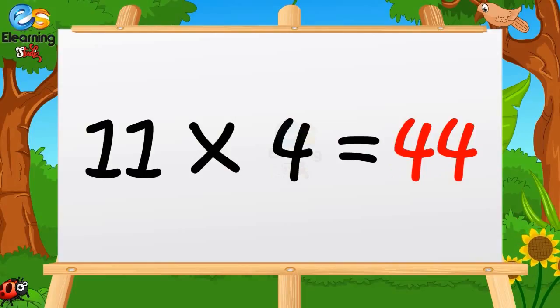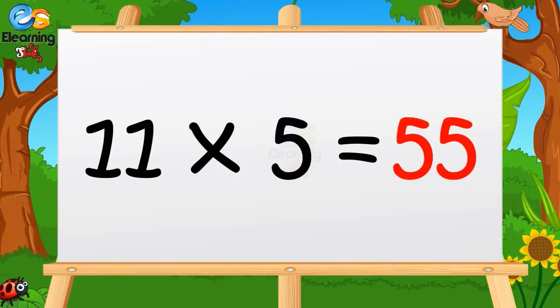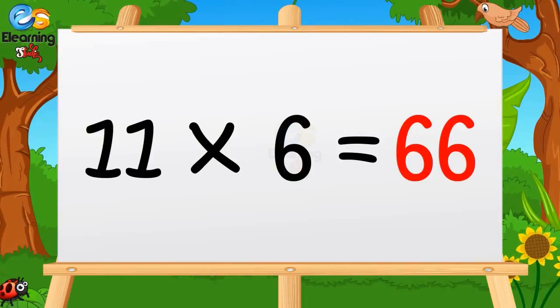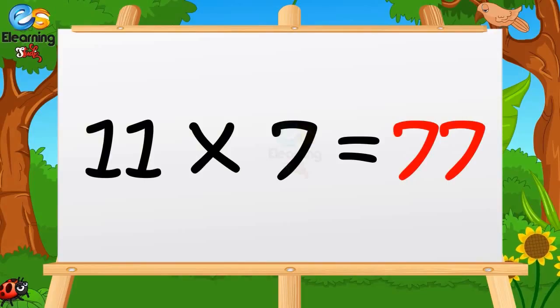11 fours are 44. 11 fives are 55. 11 sixes are 66.